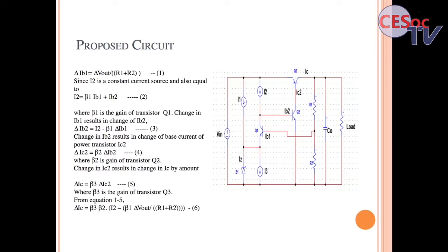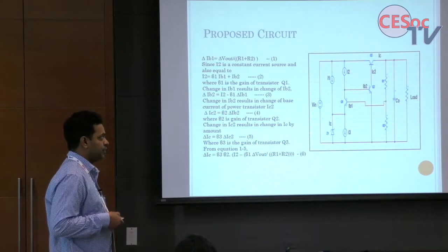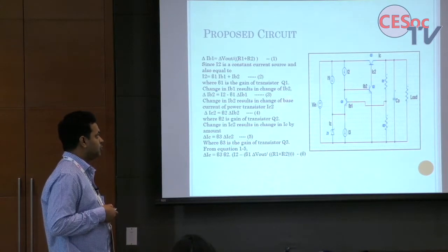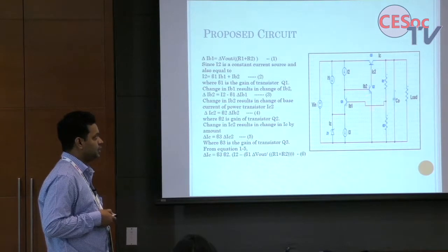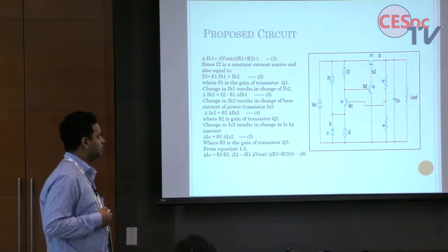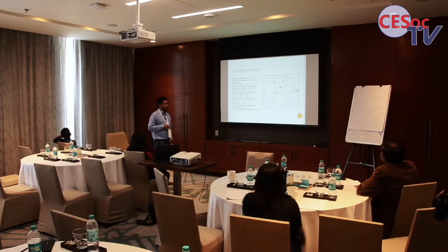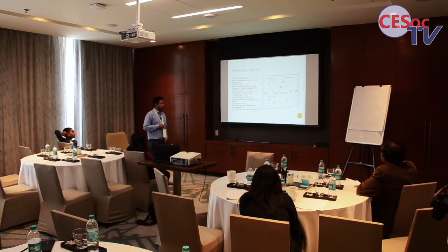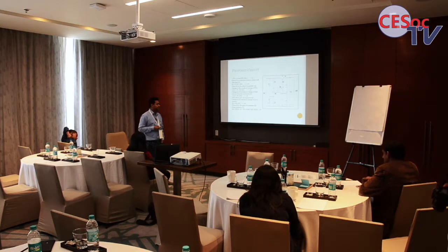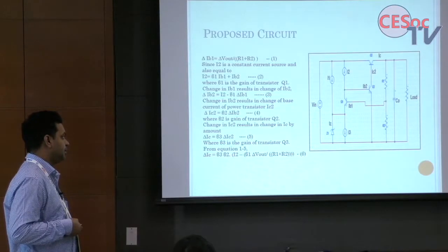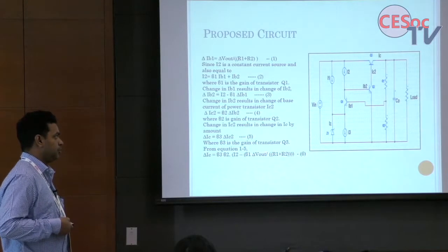In the proposed design, a PNP-based pass transistor is used with two NPN transistors to drive it. The sampling is done similarly. Any change in output voltage results in a change in I_B1, which changes current across Q1, which changes I_B2 as I_2 minus beta_1 times delta I_B1. A negative sign appears — this is the negative feedback. The change in I_B2 causes change in I_C2, which results in change in I_C. Delta I_C is beta_3 times beta_2 times (I_2 minus this factor), so change in collector current depends on the negative of change in output voltage.